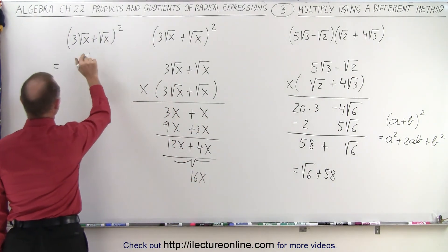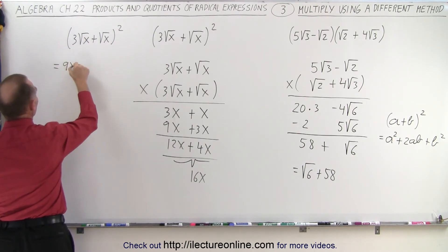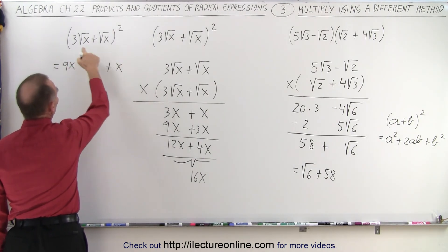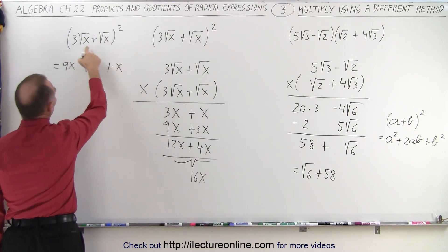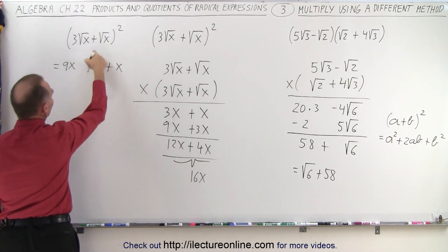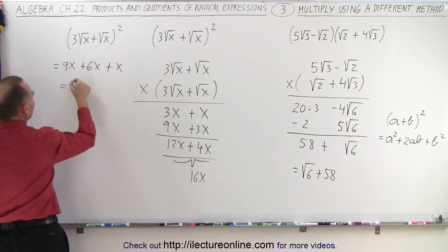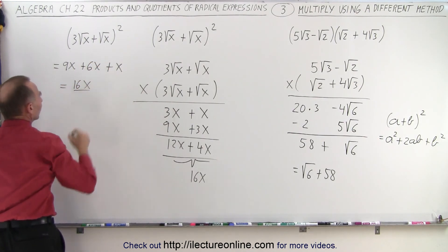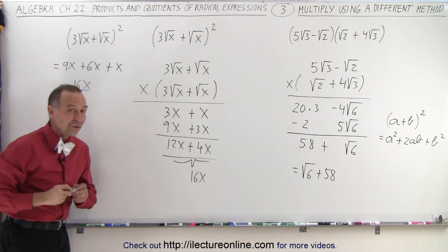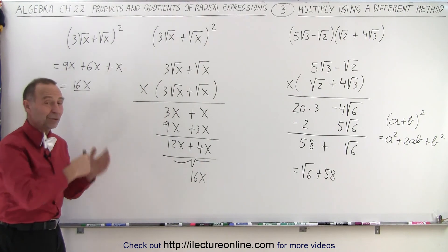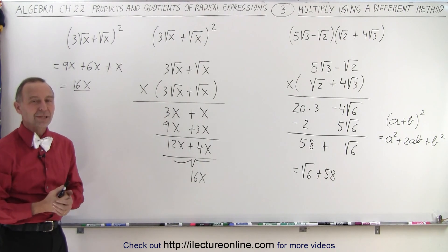Using that same technique, we can look at this and say that's simply the first term squared, which is 9x, plus the last term squared, plus x, plus twice the product of the two, so 3x times 2 gives us plus 6x. When we add them all together, that gives us 16x. You can see there are often many different ways to solve the same problem, and whatever method you prefer, that's the one we take.